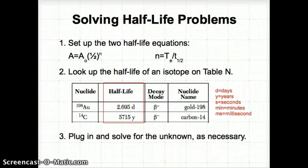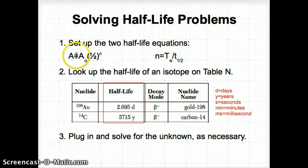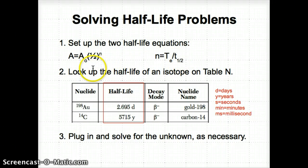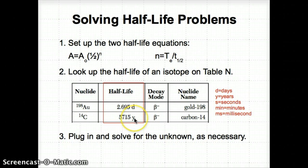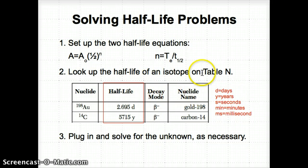Let's go through the steps to solve half-life problems. First, you have to set up two half-life equations: A = A₀ × (1/2)^N, and N = t_elapsed / t_half. Second, you need to look up the half-life of an isotope on Table N. On Table N you'll see the nuclide in the first column, the half-life in days, years, seconds, minutes, or milliseconds, and also the decay mode. For example, AU-198 has a half-life of 2.695 days, and C-14 has a half-life of 5,715 years.